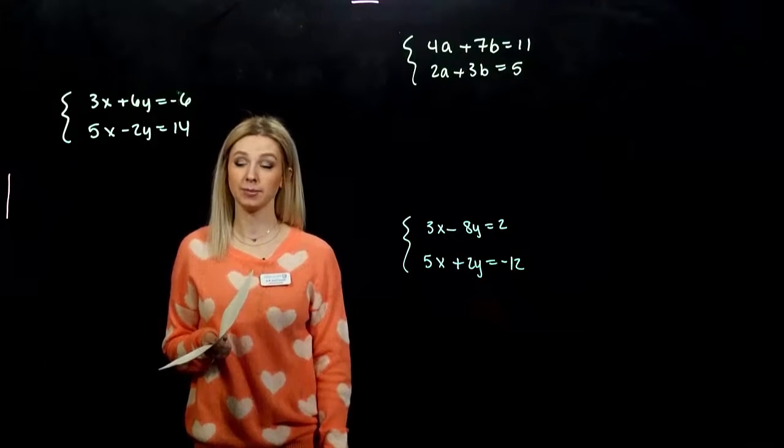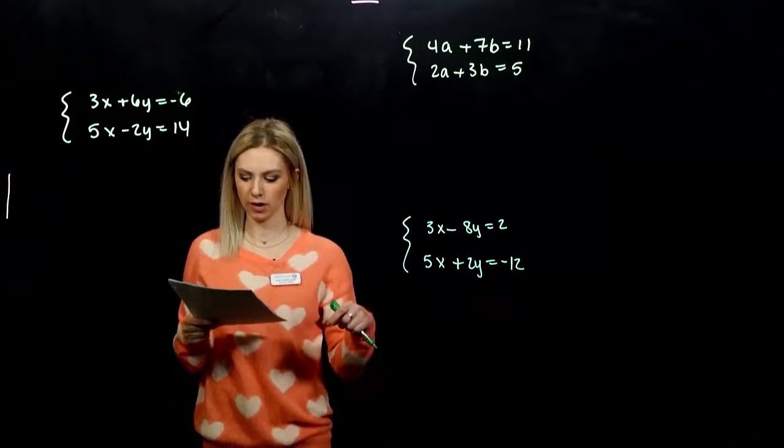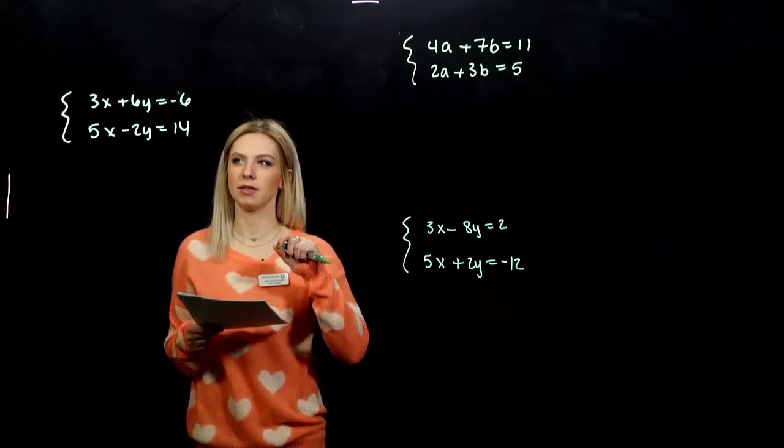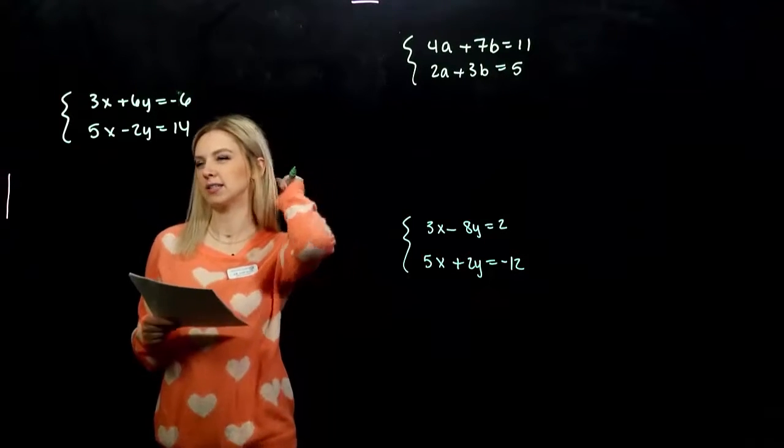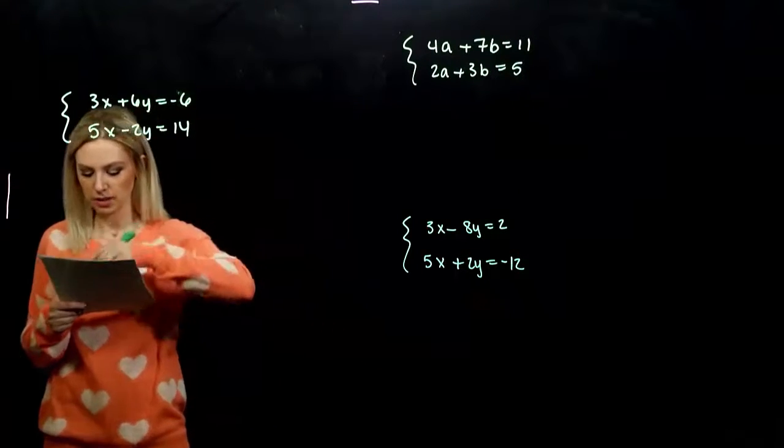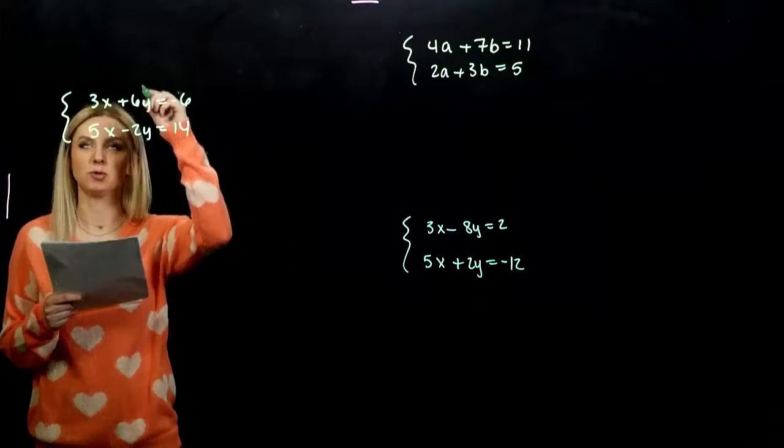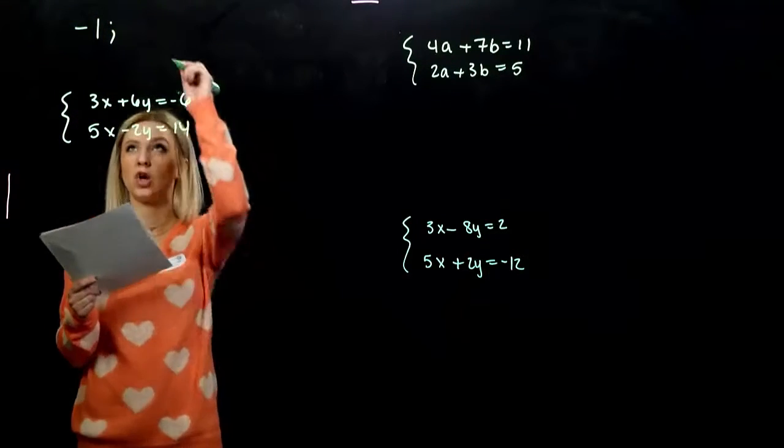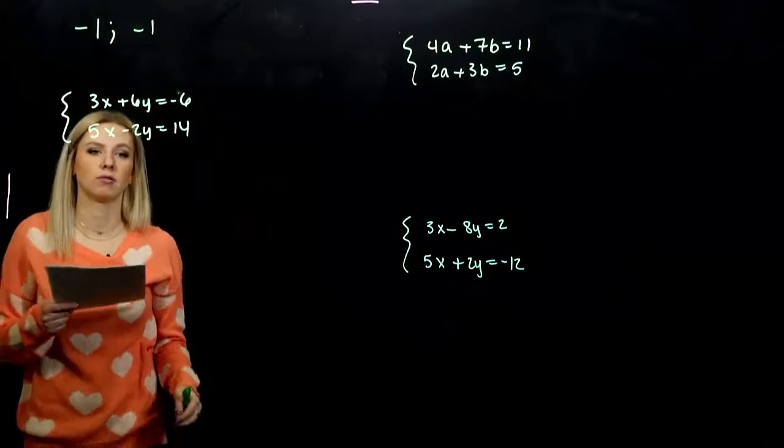Now looking at some more complicated cases. So before, when it was already given in that standard form, sometimes we had the option where we had the exact same coefficient on our variables. So we had to multiply using the multiplication principle by a negative one. But oftentimes we need to multiply by something other than negative one.